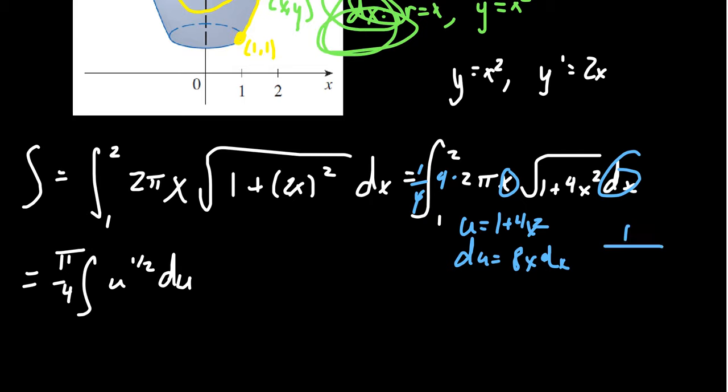As x ranges from 1 to 2, u will range from—plug these values into our function right here. When x is 1, u will be 5. When x is 2, let's see, you get 2 squared, which is 4. 4 times 4 is 16, plus 1 is 17. So we'll range from 5 to 17.